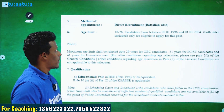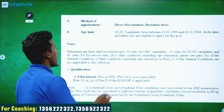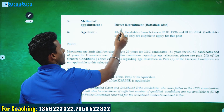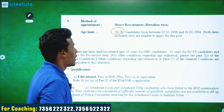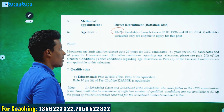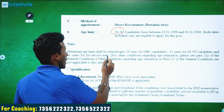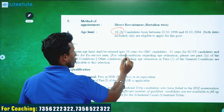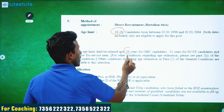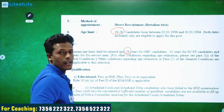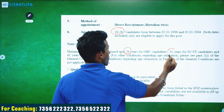After the initial appointment, you can apply. The age limit is a maximum of 29 years for OBC candidates. The maximum age limit for SES is 39 years.